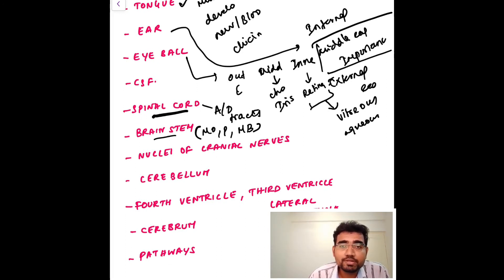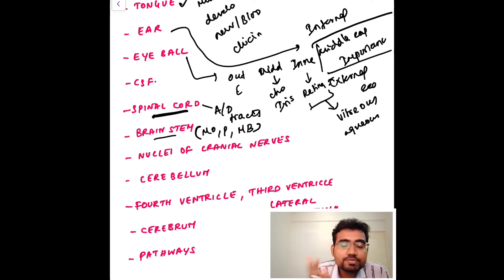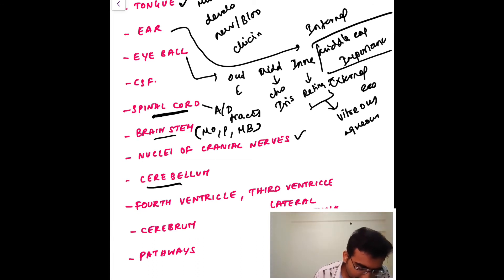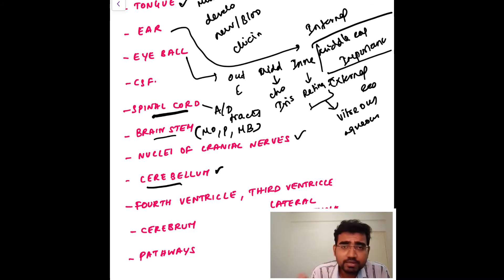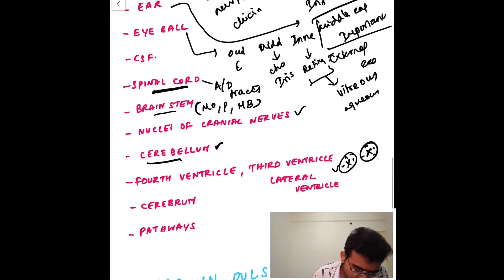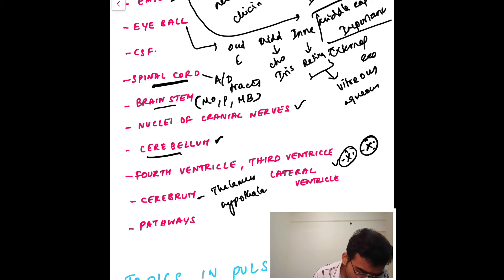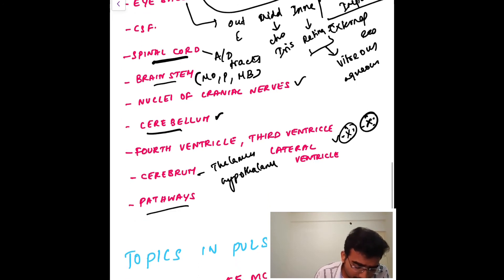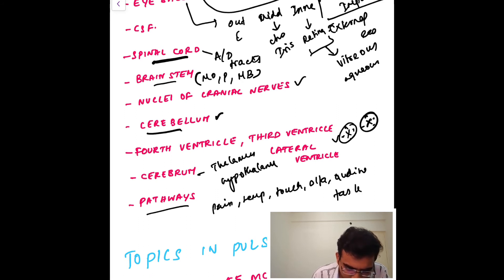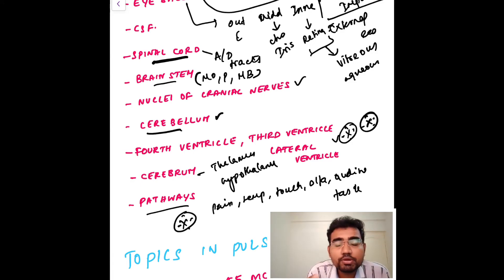For the nuclei of the cranial nerves, know the functional components — special visceral afferent, general visceral afferent, general somatic afferent — and which nerves carry each particular functional component. For the cerebellum, know its clinical aspects. Study the fourth ventricle, third ventricle, and lateral ventricles. For the cerebrum, cover the thalamus, hypothalamus, corpus striatum, and corpus callosum. Also be thorough with all the pathways — pain, temperature, touch, olfactory, auditory, and taste.